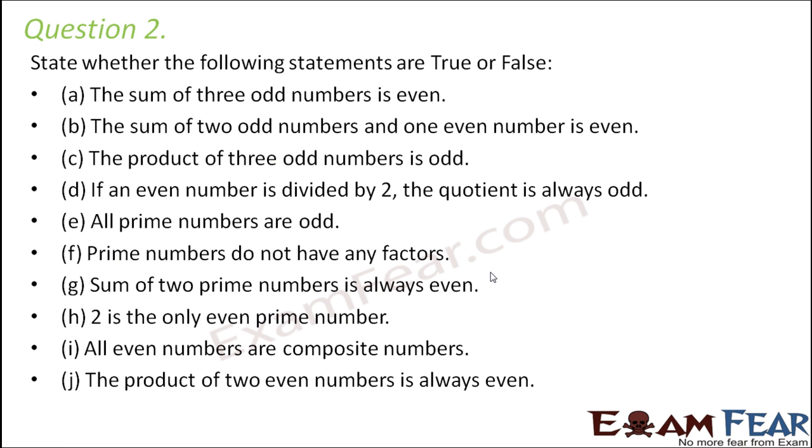Question number two. State whether the following statements are true or false. The sum of three odd numbers is even. Is this true? So let us try. Let's consider 3 is an odd number plus 5 which is an odd number plus 3 which is again odd number. So sum of three odd numbers.